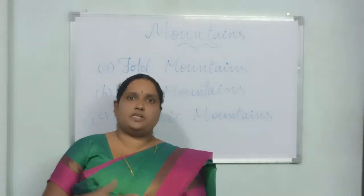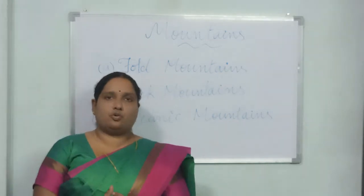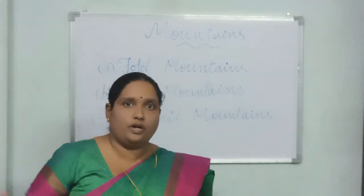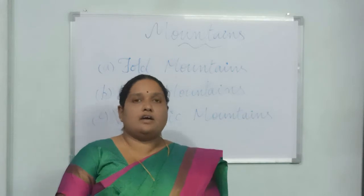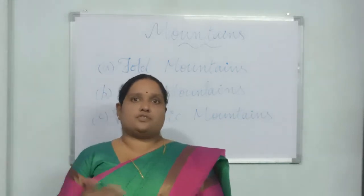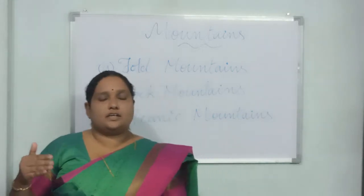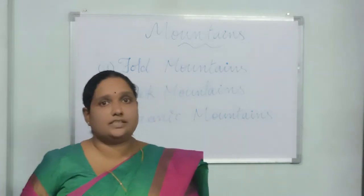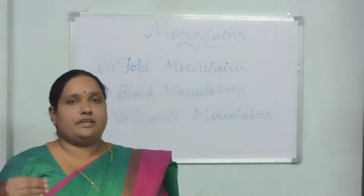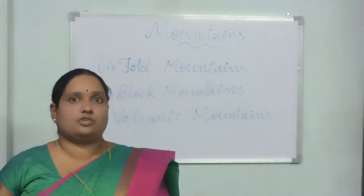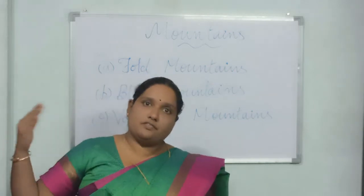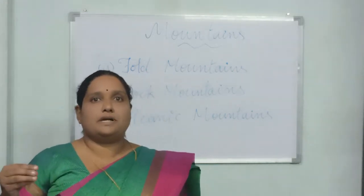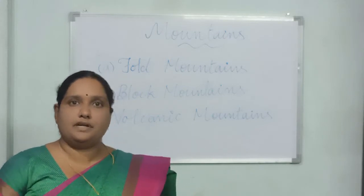Fold mountains are of two types: young fold mountain and old fold mountain. Our Aravallis are old fold mountains, Appalachians are old fold mountains, and the Himalayan mountains are young fold mountains. Old fold mountains are comparatively older, formed millions of years before, while young fold mountains are formed more recently — though still many years ago, just comparatively later.